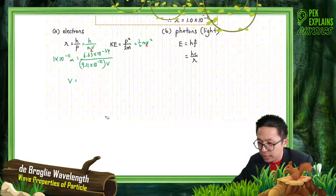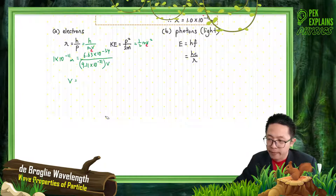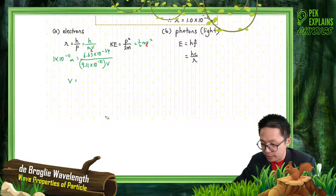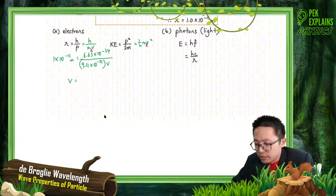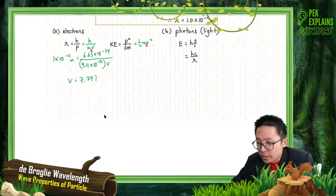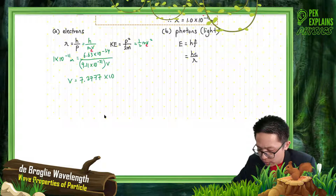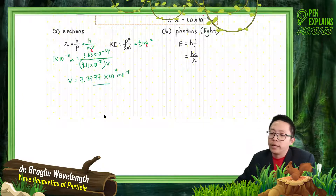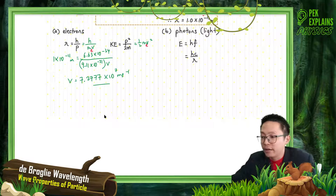Did I do it correctly? Yeah, multiply and then divide. I got that. So this is 7.2777×10⁷ meters per second. I got the velocity now. So now I find the kinetic energy — just use half mv².